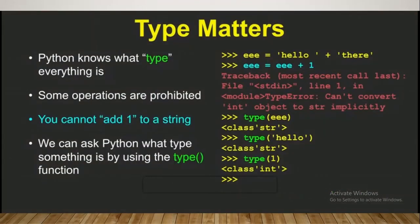Type matters. Python knows what type everything is. Some operations are prohibited. You cannot add 1 to a string - it's really a meaningless thing. You cannot add an integer to a string. If you have 5 plus 'hello', what does this mean? Nothing.